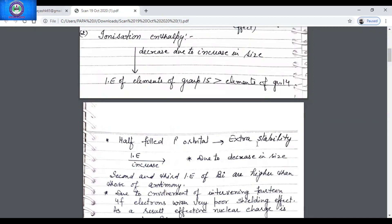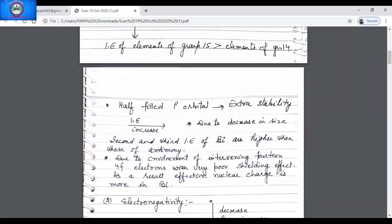The reason is because of the half filled p orbital and due to the extra stability of the p orbital. Second and third ionization enthalpy of bismuth are higher than that of antimony. The reason is it's due to the involvement of intervening core of electrons with very poor shielding effect. As a result, effective nuclear charge is more in bismuth.